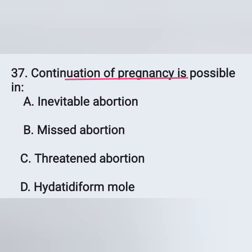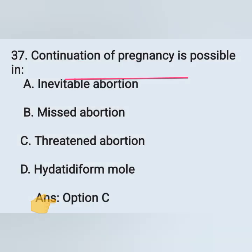Question 37: Continuation of pregnancy is possible in — options: option A, inevitable abortion; option B, missed abortion; option C, threatened abortion; option D, incomplete abortion. The correct answer is threatened abortion. Option C is the correct answer.